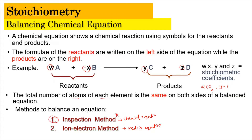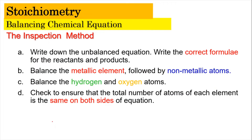Now we're going to focus on the inspection method. We start with the unbalanced equation, and the most important thing is to write the correct formula for the reactants and products. The way to balance it is to start with the metallic element first, followed by the non-metallic atom, then hydrogen, and finally oxygen. At every step, we ensure the total number of atoms of each element is the same on both sides.